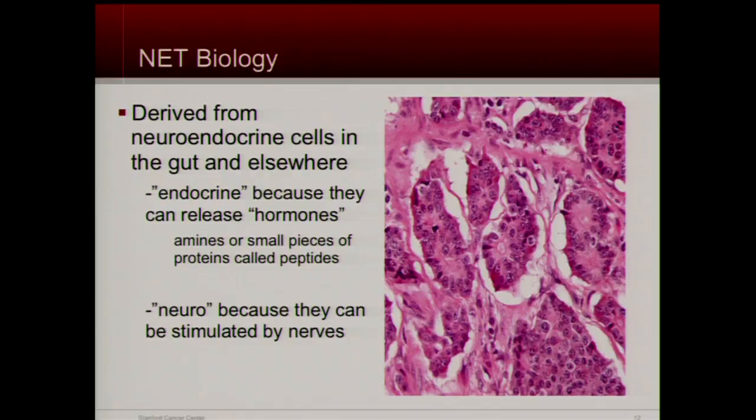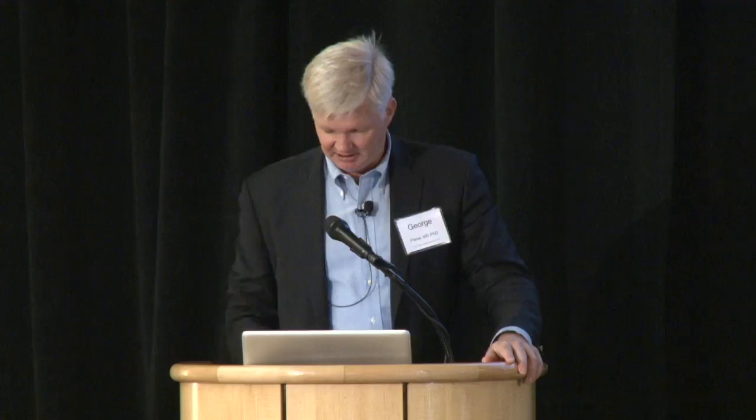Where does the neuroendocrine term come from? Carcinoid was just made up by a German pathologist in 1907. The neuroendocrine term comes from the fact that these are endocrine-producing cells — they can make hormones, and they can also respond to hormones. Not sex hormones, but hormones like somatostatin that can have an effect on the cancer cell, and the cancer cell can release hormones that affect other tissues. We call them neuroendocrine because these hormones can be triggered to be released by nerve impulses in the gut. These cells, which normally line the gut, are triggered by nervous impulses to secrete things to help you have bowel movements. When they become a cancer, they are always producing those hormones inappropriately and can sometimes cause diarrhea.